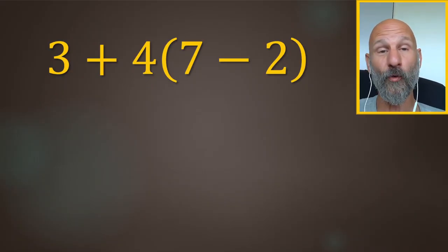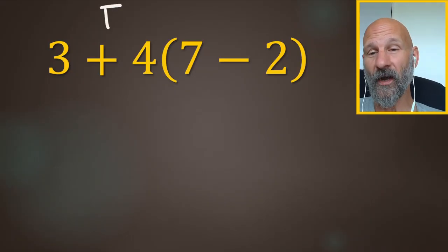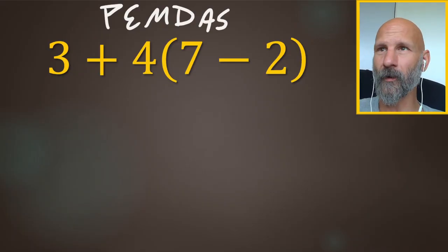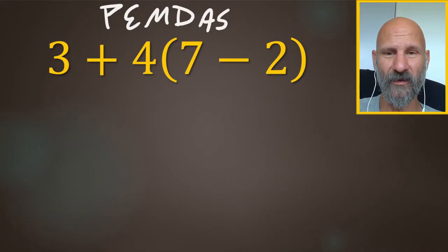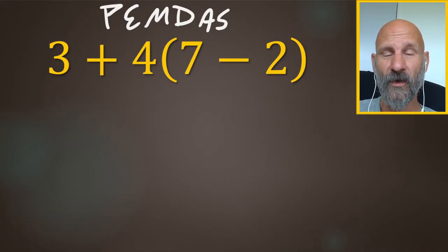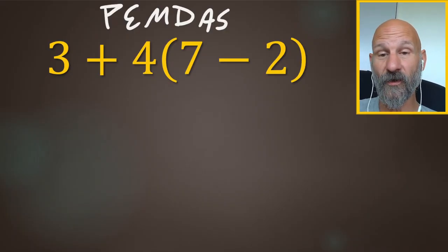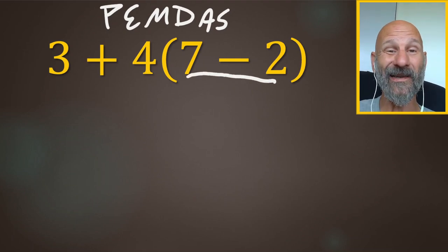This is an order of operations question. We're looking at PEMDAS, or GEMDAS, or BODMAS, or BEDMAS - tons of different acronyms there. Parentheses go first, so we're going to start with the 7 minus 2.